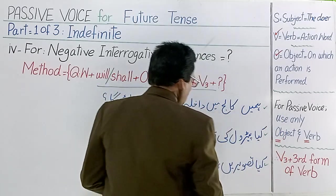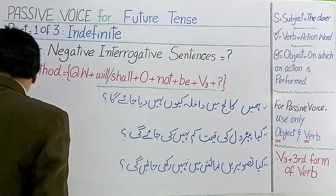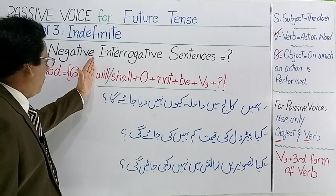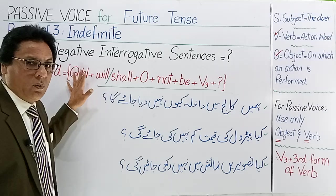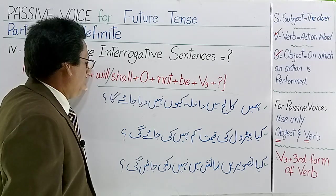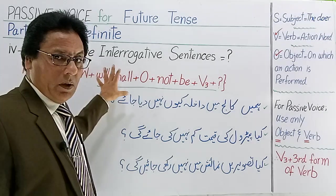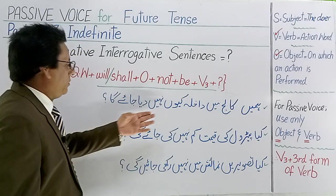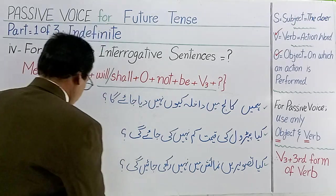ٹھیک ہے۔ تو یہ بات آپ ذہن میں رکھیں اور اس کو focus کریں — یہ ویسے لکھتا ہے کیونکہ یہ rule ہے۔ اور questioning word اگر ہو، تو پھر یہ استعمال ہوتا ہے۔ تو let's see — ہمیں کالج میں داخلہ کیوں نہیں دیا جائے گا؟